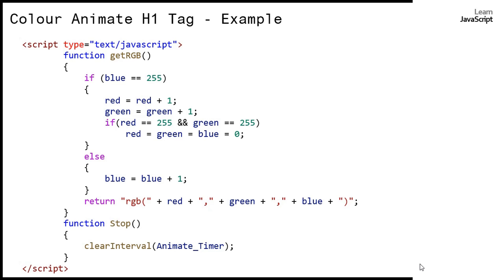There is also a stop function which uses clearInterval to stop the timer. We already saw that we stored the setInterval return value in animateTimer, so in the stop button's onclick handler we pass animateTimer to clearInterval, which stops the timer.